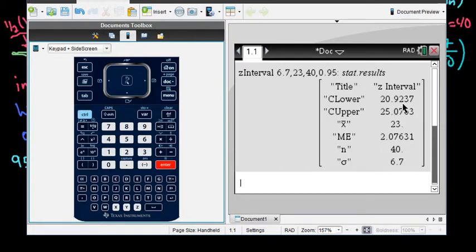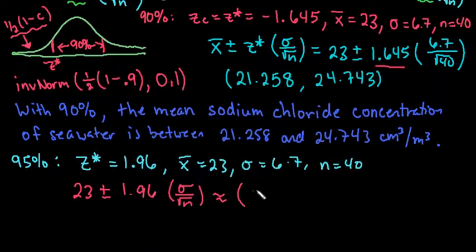And the only thing that that's going to do is increase the width of my interval. It's going to make it a little bit wider, so I'm more likely to capture it. So I would just put down the 20.9237. And then the upper would be 25.0763.